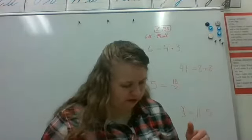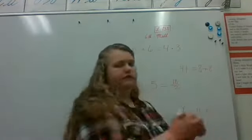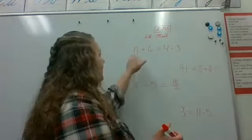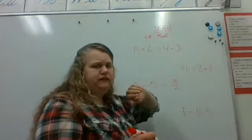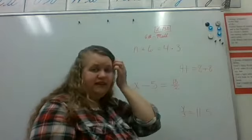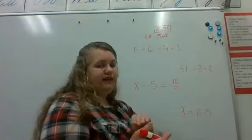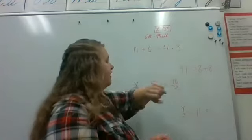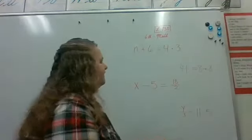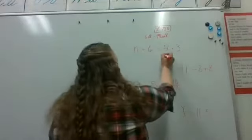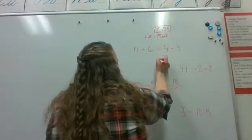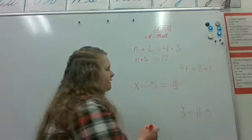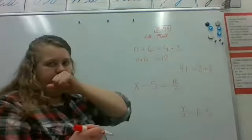With this first example, we're going to simplify the easiest thing. Can we add n plus six? Not without knowing what n is — we can't add that until we know what n is. But we can multiply four times three — we get 12. So four times three is 12. We're going to write the equation exactly as it is: N plus six equals 12.